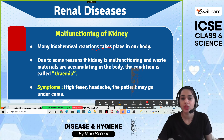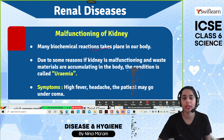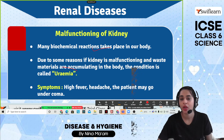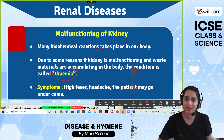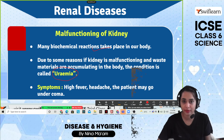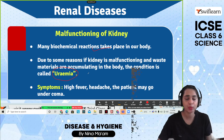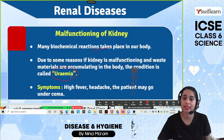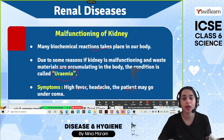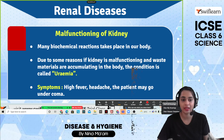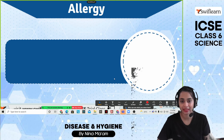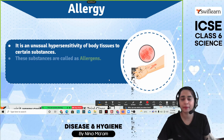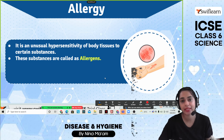Renal diseases involve malfunctioning of the kidneys. Many biochemical reactions take place in the body, and if the kidney malfunctions, waste materials accumulate in the body. This condition is known as uremia. Symptoms include high fever, headache, and the patient may go into a coma, so it can be very severe.